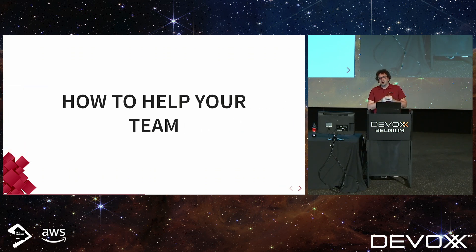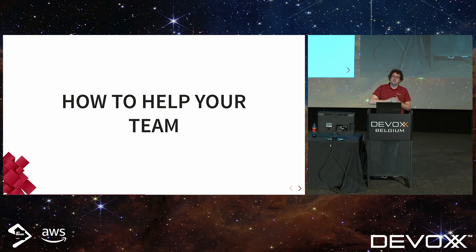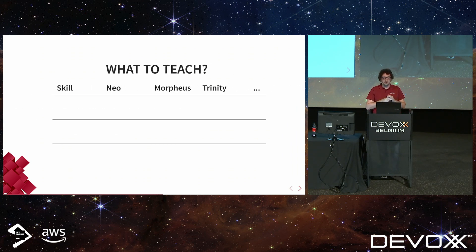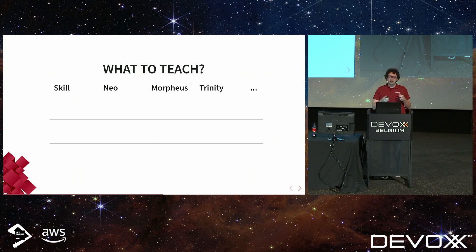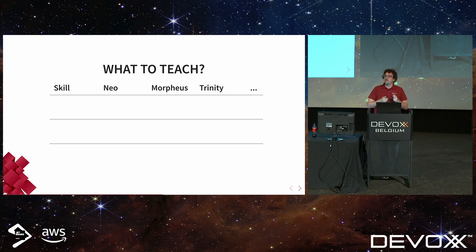So that's the abstract part — I've set the framework. Now I'm going to show you how to apply this in practice: how do you help your team? You need to figure out two things: what should we be teaching or learning, and how are we going to do that? To figure out what to teach, I've set up a little matrix of skills and team members, assessing each team member on the skills needed to successfully complete the project.